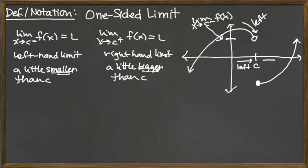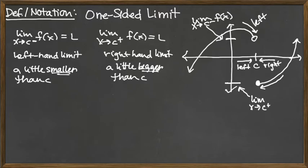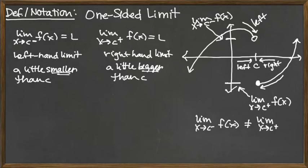As we approach C from the right, we're coming in from values bigger than C. When we look at our function, we're approaching a solid dot. That y value is the limit as x approaches C from the positive side of the function. Notice that the left-side limit does not match the right-side limit in this case — one was a positive value, the other ended up being a negative value, so those two things don't match.